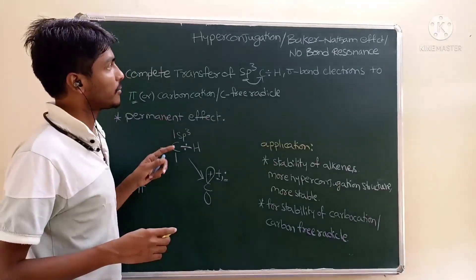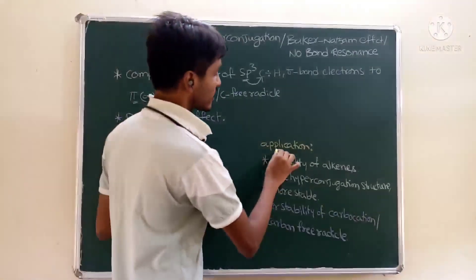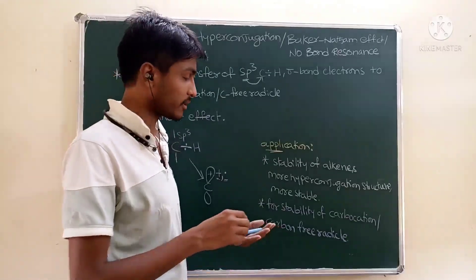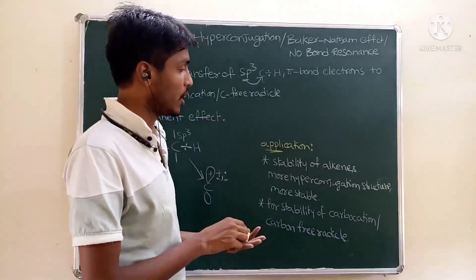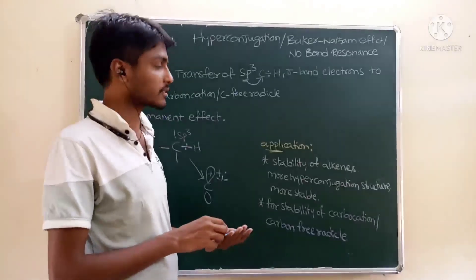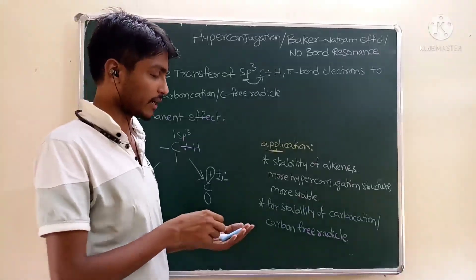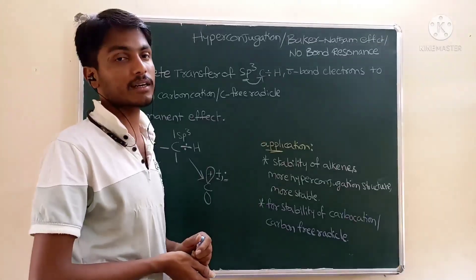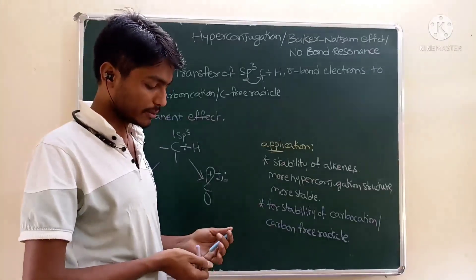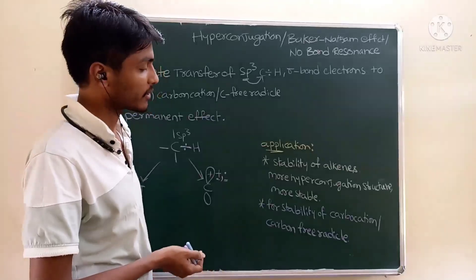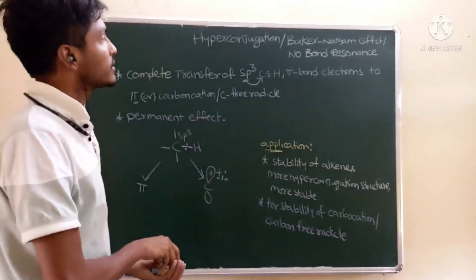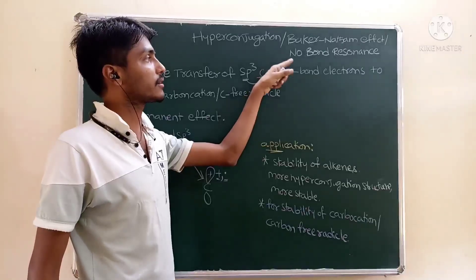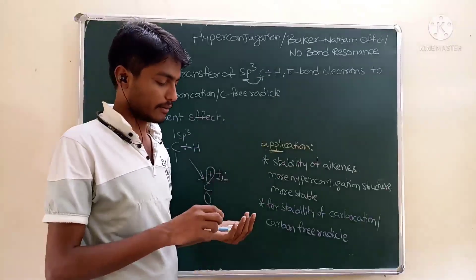Application of hyperconjugation — very important. For the stability of alkanes, more the number of hyperconjugation structures, more stable the alkane. It also applies to the stability of carbocations and carbanions. This is the Baker-Nathan effect or no-bond resonance.